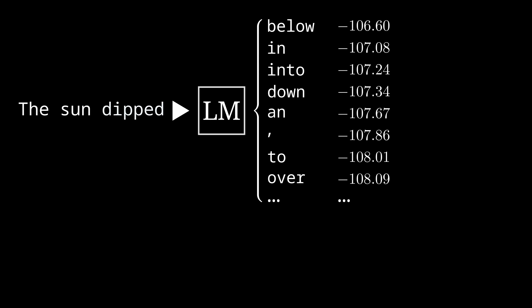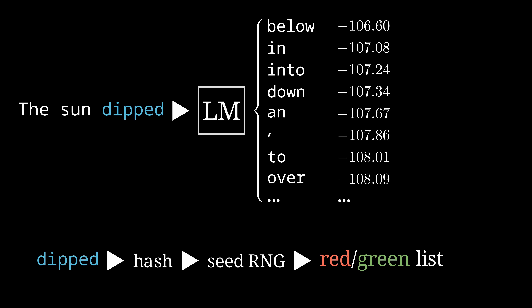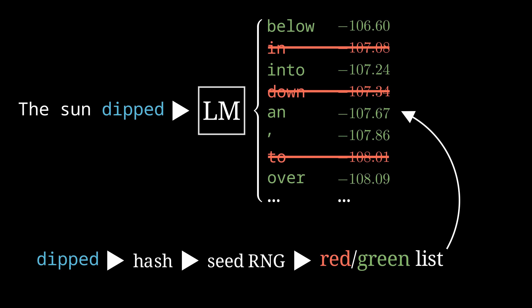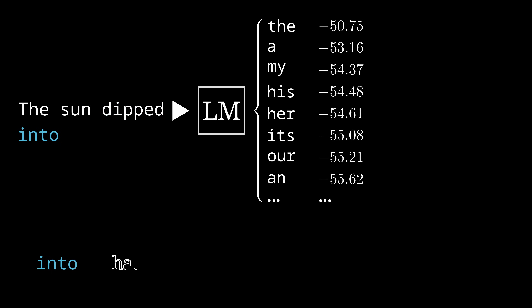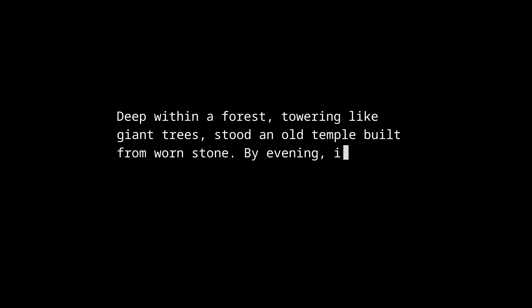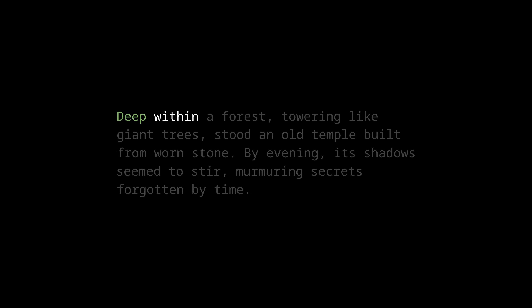Let's see how this procedure works as a whole. The model gets a prompt and predicts the logits. We hash the last token of the prompt, feed it into a random number generator, and partition the vocabulary into a red and green list. We ban all tokens on the red list, then a token is chosen based on the probabilities of the remaining ones, and this repeats. For detection, we take a simple case with two words: based on the first word, we calculate the red list and check if the second word is on it. If it is, that's an indication the text is not watermarked; if it's on the green list, it may be watermarked — but the evidence of just one word is not enough.